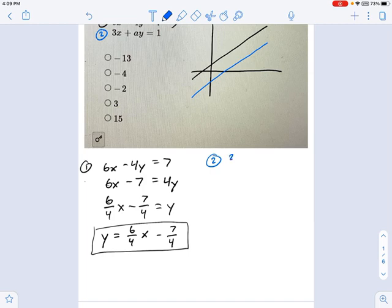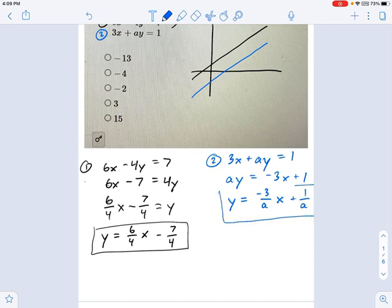So equation number two says 3x plus a times y equals 1. Rearrange it a little bit, and we get a times y equals negative 3x plus 1. And that means I can divide each side by a and get negative 3 divided by a times x plus 1 over a. That's this equation in its slope-intercept form.